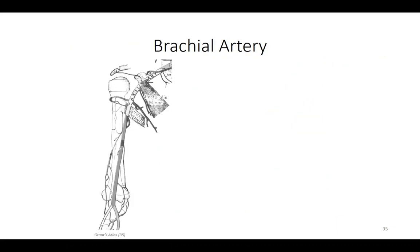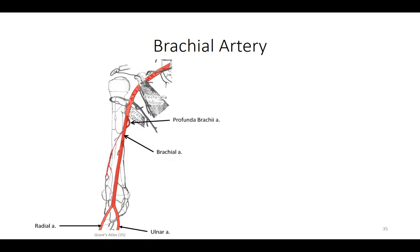We next turn our attention to the vascular supply of the brachium. In our previous lesson, we traced the subclavian artery into the axillary artery, which supplies the entire upper limb. Past the inferior border of the teres major muscle, the axillary artery becomes the brachial artery — the principal artery of the arm — which sends branches to supply the anterior compartment. The artery travels in the medial neurovascular compartment before shifting anteriorly in the cubital fossa to split into the radial and ulnar arteries. Just distal to the surgical neck of the humerus, the brachial artery gives off the profunda brachia artery, which courses through the triangular interval, joining the radial nerve deep in the posterior compartment to supply blood to this region.